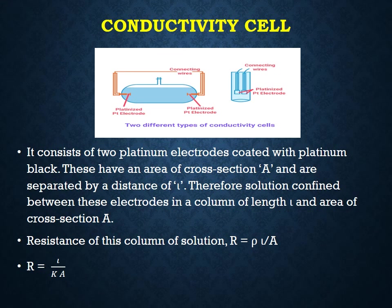A conductivity cell consists of two platinum electrodes coated with platinum black. These have an area of cross-section A and are separated by a distance L. Therefore, the solution confined between these electrodes forms a column of length L and area of cross-section A. The resistance of this column of solution is equal to rho L by A, or R is equal to L by kA.